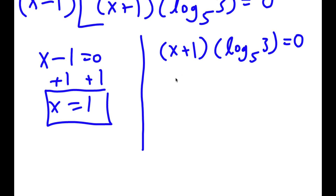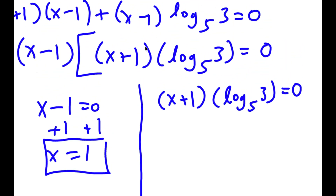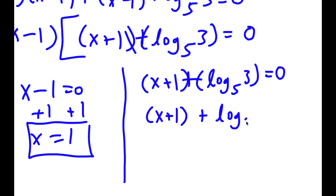Wait, I made a mistake. This isn't supposed to be times — this is actually supposed to be plus. So this is plus, giving x plus 1 plus log base 5 of 3 is equal to 0.